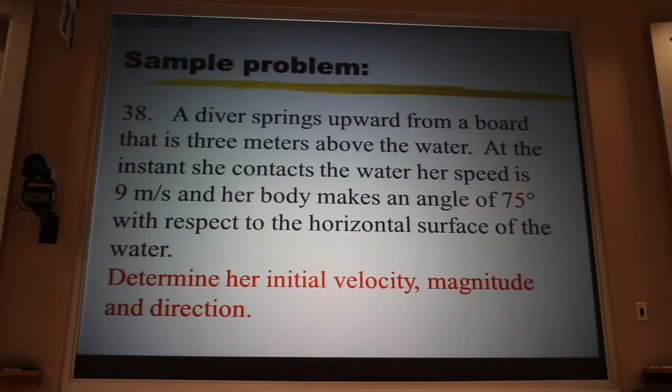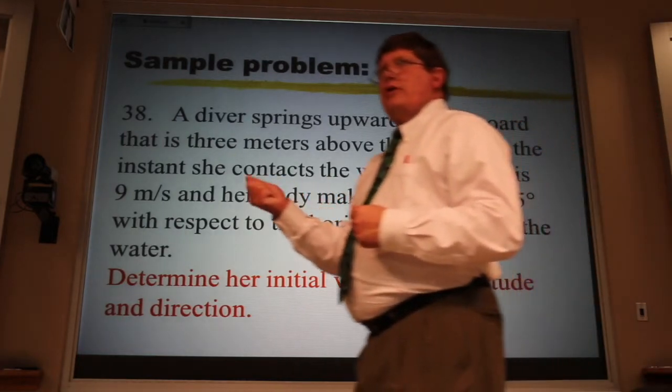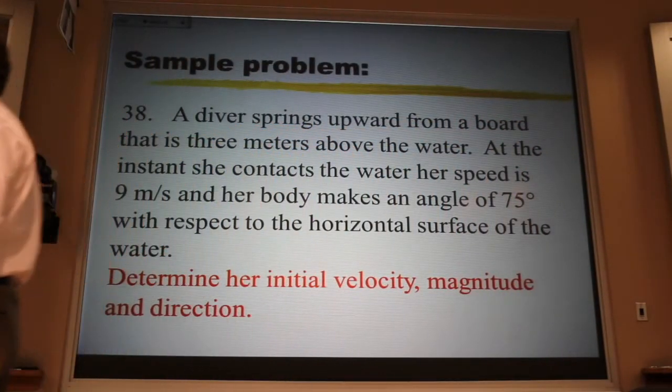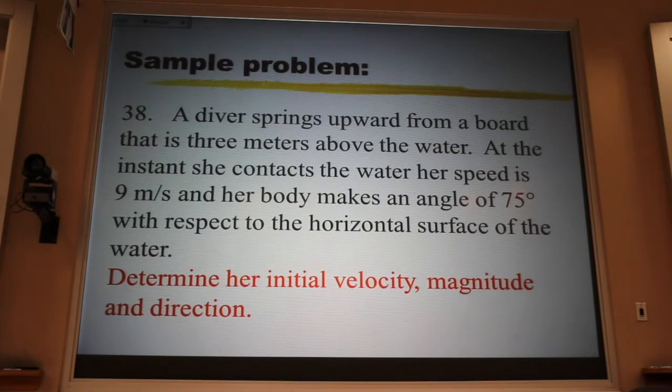We're asked to find the initial velocity vector. Now a velocity vector, or any vector, has two parts. The magnitude, always a positive number, that's the size. That's represented by the length of the vector. And then the direction.